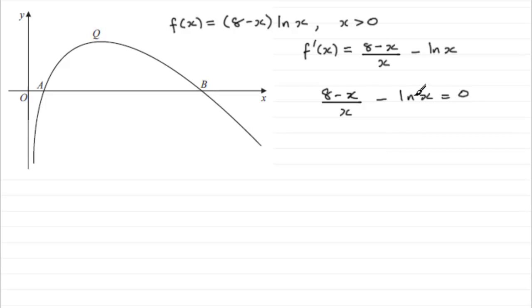And what I want to do now is just add the natural log of x to both sides. That's going to give me (8-x)/x equals the natural log of x. And multiply now by x to both sides, giving me 8 minus x equals x natural log of x.